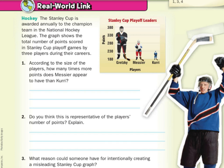According to the size of the players, how many times more points does Messier appear to have than Curry? Curry is going up one line, Messier is going up two lines. So let's say about two times as many.